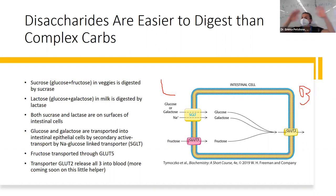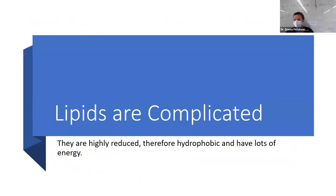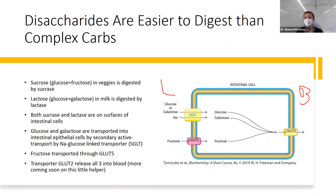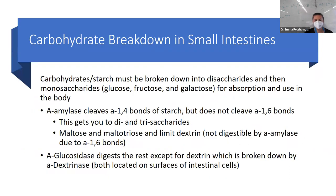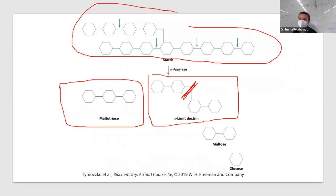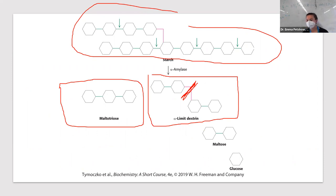From the blood, they go to wherever they need to go — they're in systemic circulation. To recap sources: maltose, maltotriose, and limit dextrin all come from different starch molecules — more complex carbohydrate breakdown. Fructose comes from your vegetables and lactose from milk. Glucose, or maltose, is just glucose plus glucose.